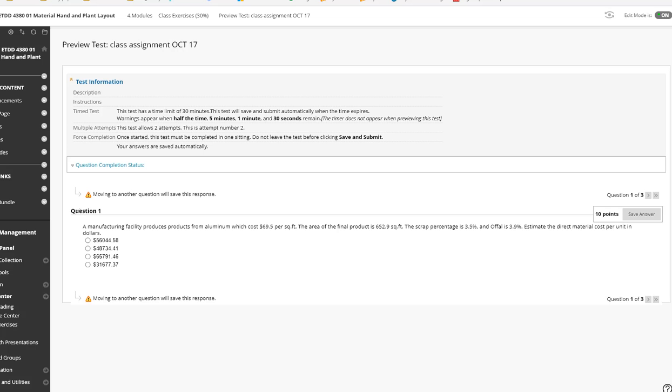Now you will see similar examples in the Blackboard. For example, a manufacturing facility produces products from aluminum which cost so and so. The area of the final product is given as this much. Scrap percentage and offal percentage is given. You have to estimate the direct material cost per unit in dollars.